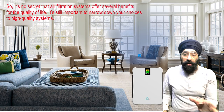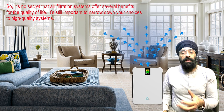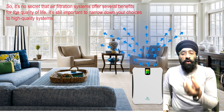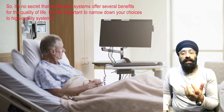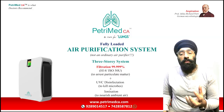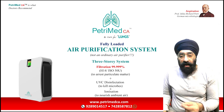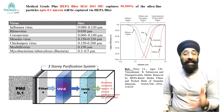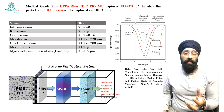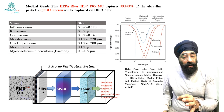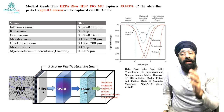It is not a secret that an air filtration system offers several benefits for quality of life, and it is important to narrow down the choices of high quality systems to combat indoor air pollution. The fully loaded Petrimed CA air purification system is not an ordinary air purifier. It contains medical grade plus HEPA filters H14 ISO 50U, which captures 99.999% of ultrafine particles up to 0.1 microns and ensures contamination-free air.